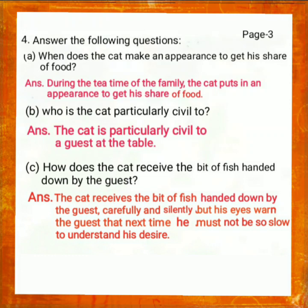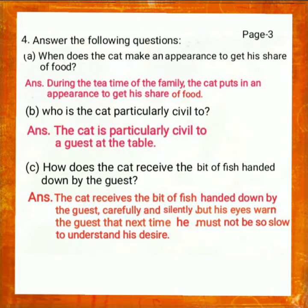Question No. 4: Answer the following questions. A. When does the cat make an appearance to get his share of food? Answer: During the tea time of the family, the cat puts in an appearance to get his share of food. B. Who is the cat particularly civil to? Answer: The cat is particularly civil to a guest at the table. C. How does the cat receive the bit of fish handed down by the guest? Answer: The cat receives the bit of fish handed down by the guest carefully and silently, but his eyes warn the guest that next time he must not be so slow to understand his desire.